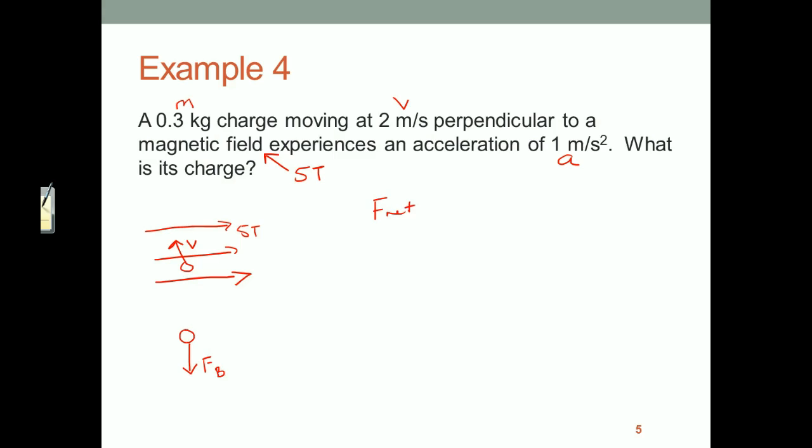So F net equals ma. The mass is 0.3. The acceleration is one. So the net force has to be 0.3 newtons, and that is given by only this magnetic force. Magnetic force is qvb when we're moving perpendicular. So I can plug that in. q times the velocity, which is 2, times the field, which we made up to be 5. So 10q equals 0.3, or q equals 0.3 divided by 10, which is 0.03 coulombs.